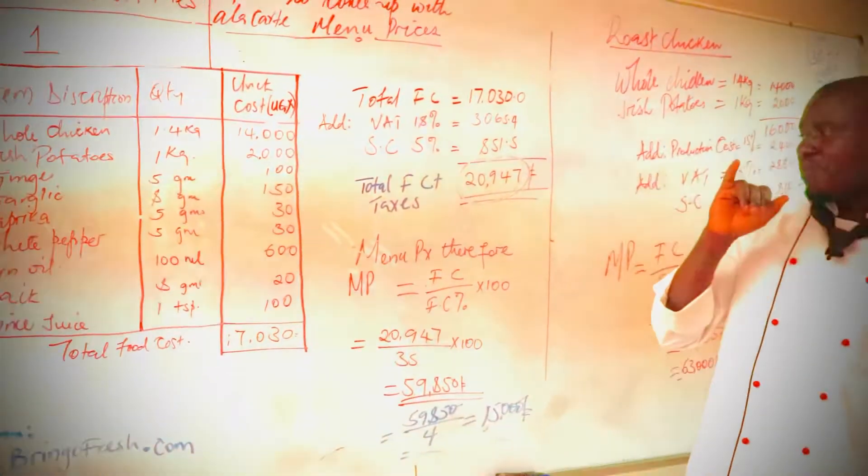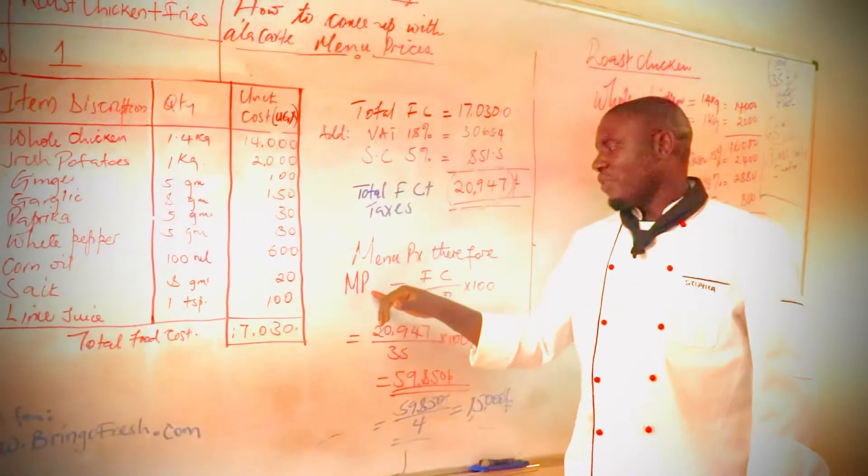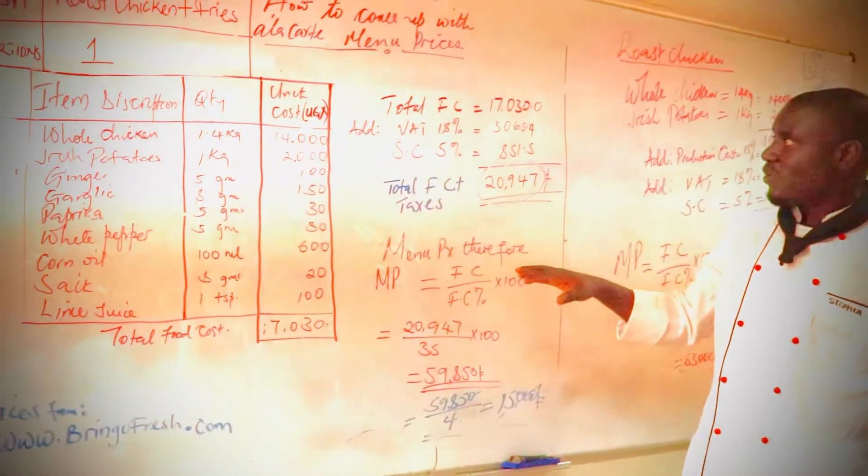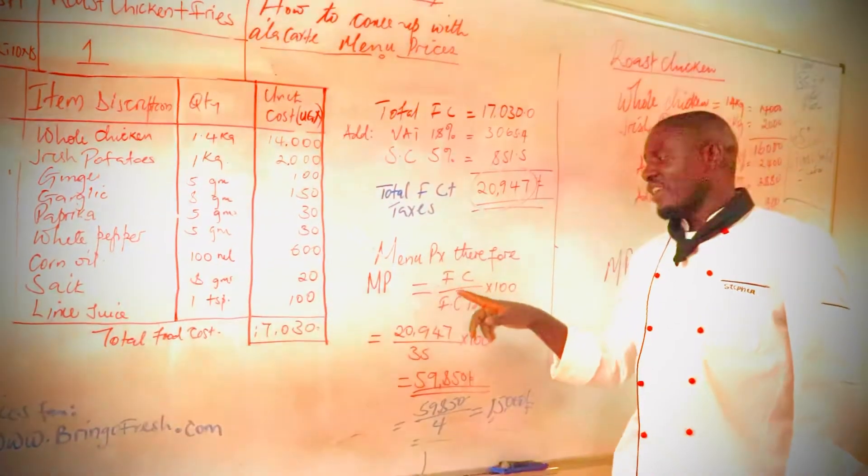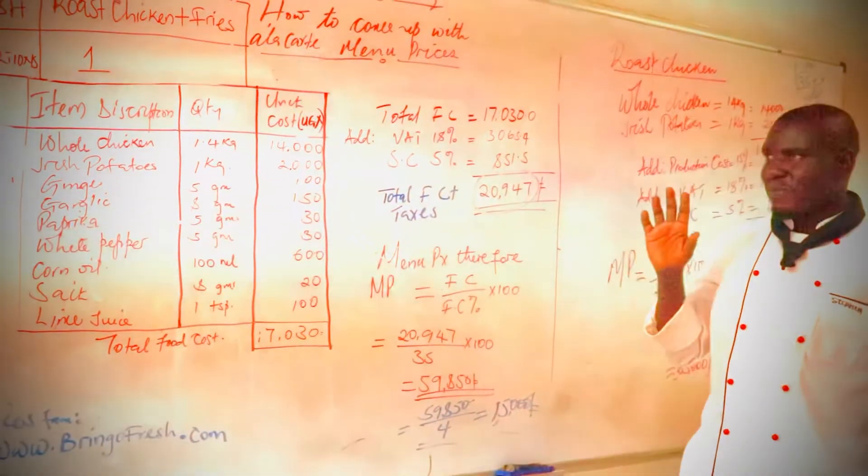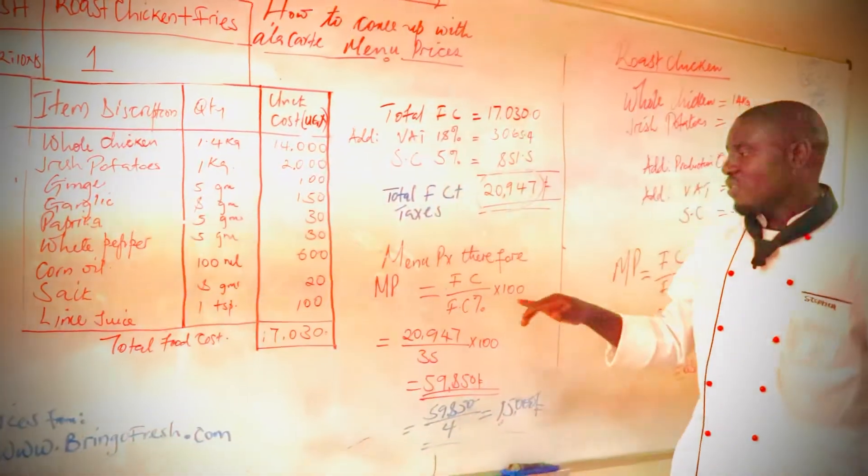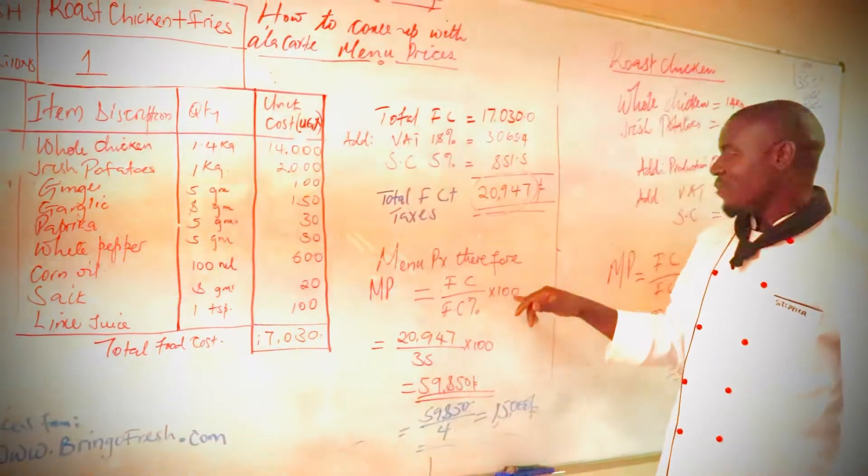So to come up with the menu price, we say our menu price equals the food cost which is the 20,000 divided by the food cost percentage. At this level we are using 35% food cost percentage, so divided by the food cost percentage times 100.